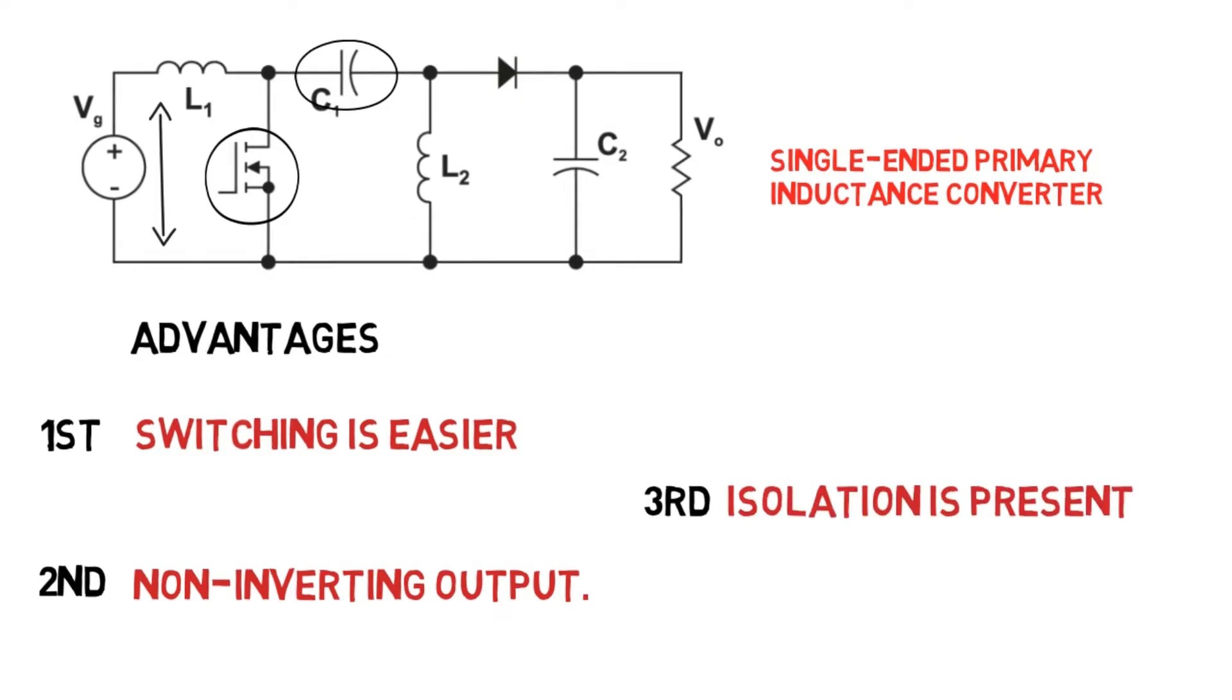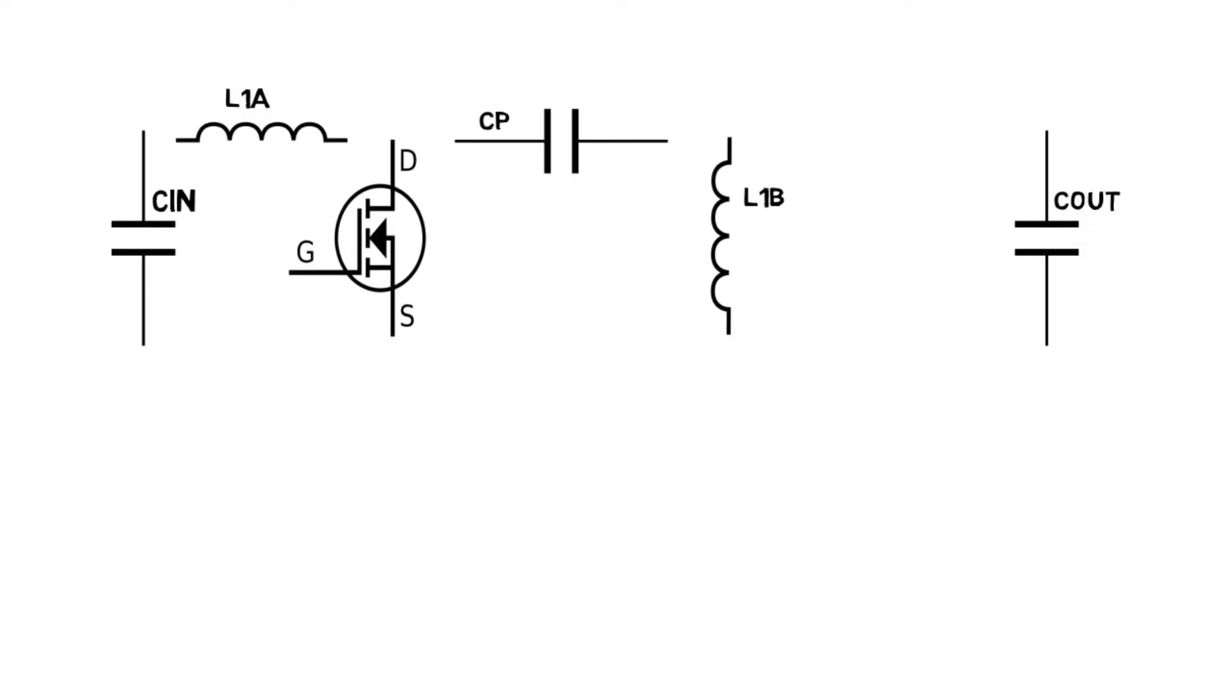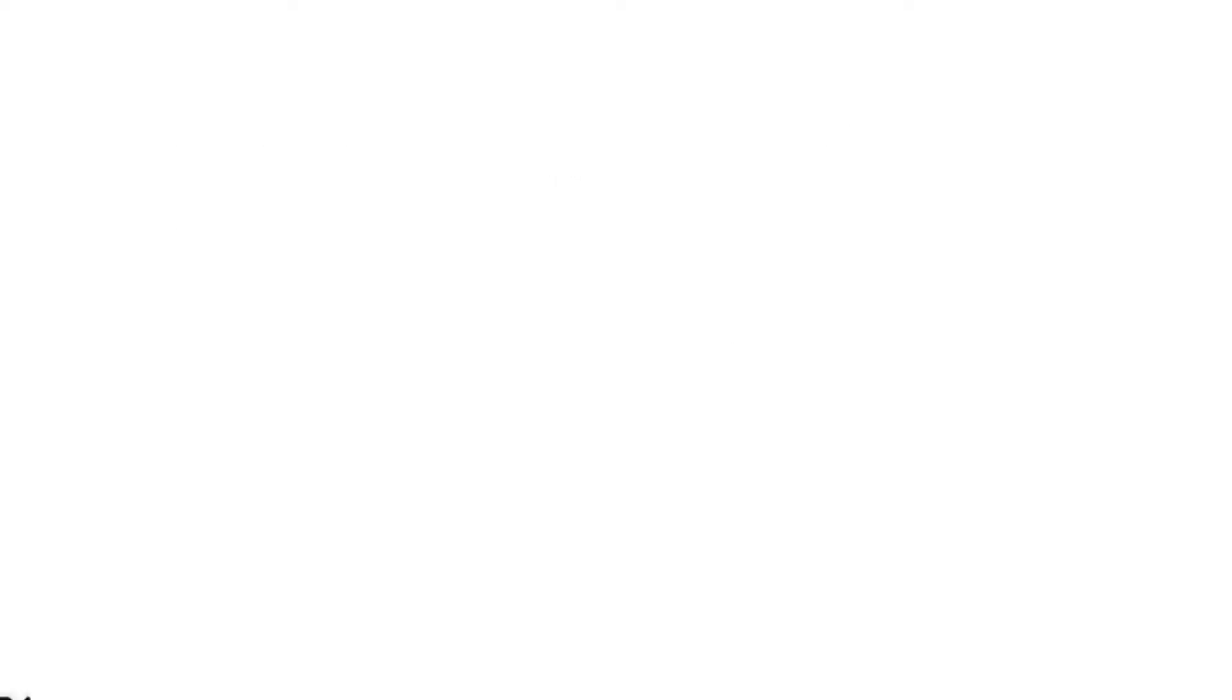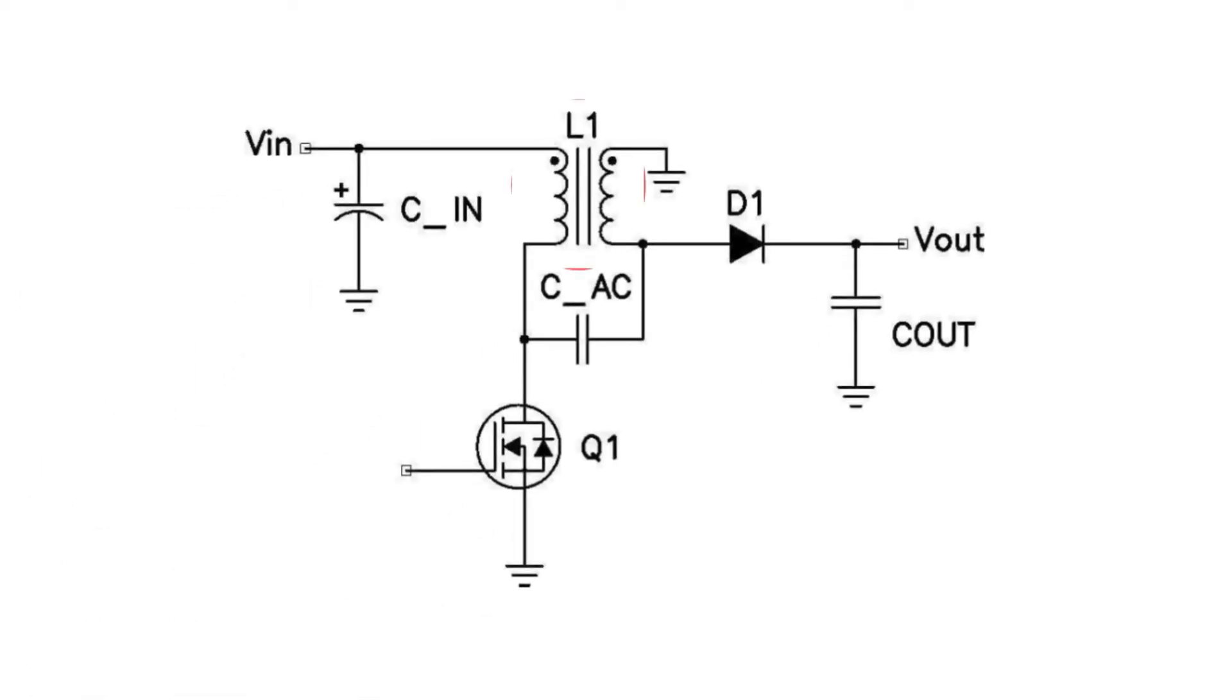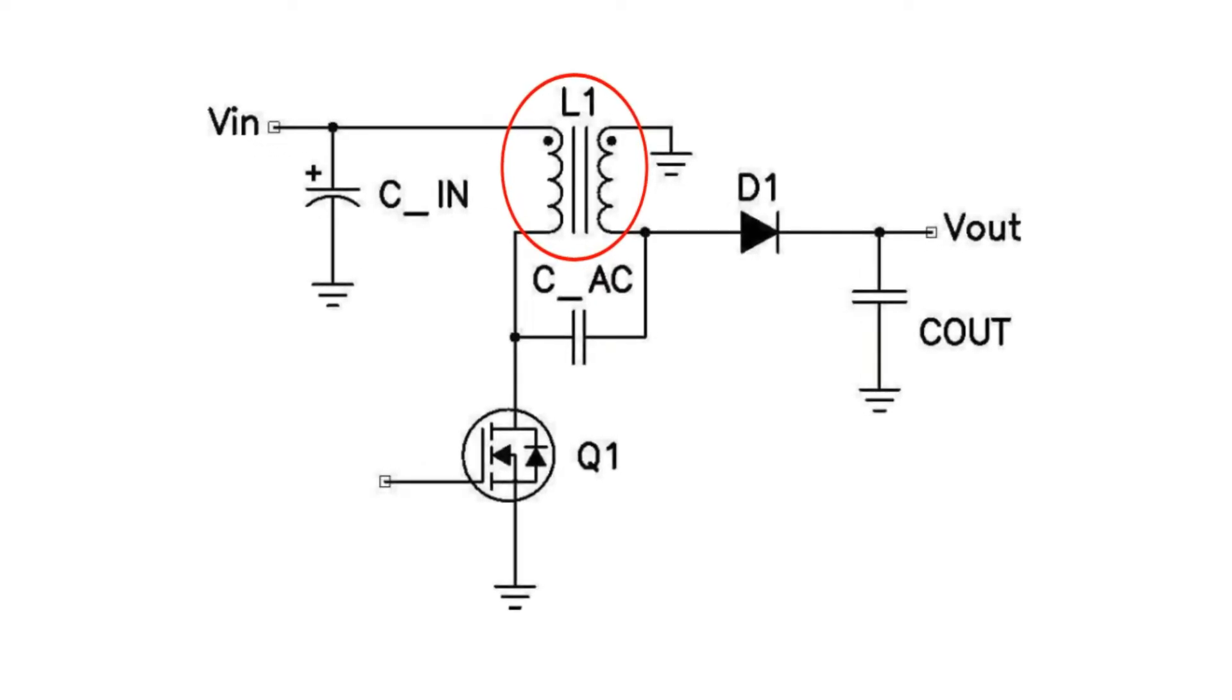This converter contains input capacitor, output capacitor, two inductors, a coupling capacitor, a control switch that is a transistor, and an uncontrolled switch that is a diode. Instead of using two different inductors, we can use coupled inductors wound around one core itself. However, coupled inductor design gives better efficiency of the converter than uncoupled ones, but for easy understanding, we'll design the converter with uncoupled inductors in this video.